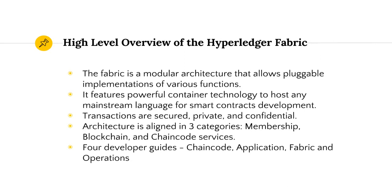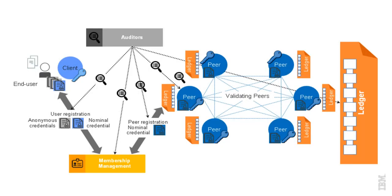On the Fabric, you have four developer guides: a chain code developer guide, application developer guide, Fabric, and operations developer guide. You can use any one of these guides for your intended use. This is the image of a Fabric network. You have multiple peers who act as validators, a client with an end user, membership services, auditors who have access to the ledgers, and the consensus protocol runs across these nodes.